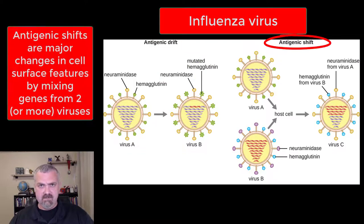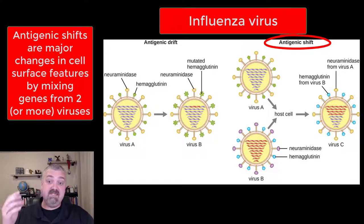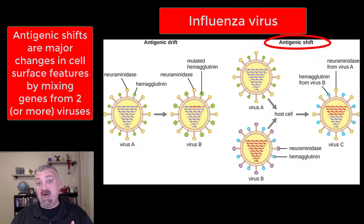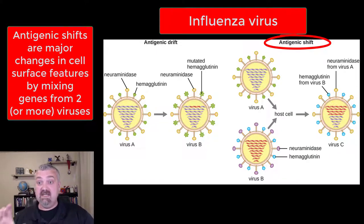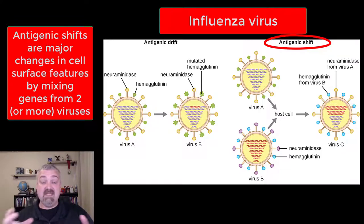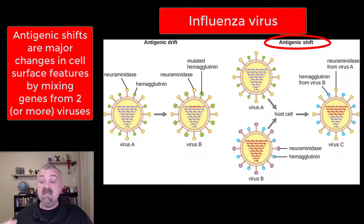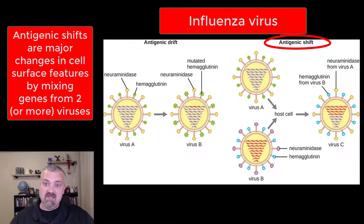Antigenic shifts occur when one person is infected with two different influenza viruses. Virus A and virus B actually reassort and swap their genes, and out comes virus C, which looks a lot different. Antigenic shift is where most, if not all, of the influenza pandemics came from — like the flu pandemic of 1918 that killed 30 to 50 million human beings and 600,000 Americans. Antigenic shifts are huge changes in what the surface of the flu virus looks like.